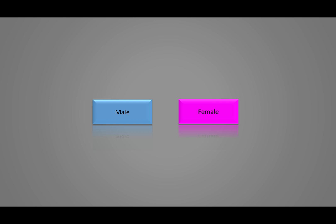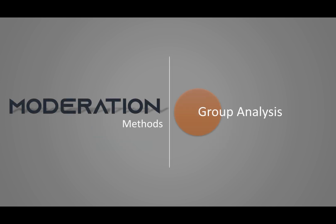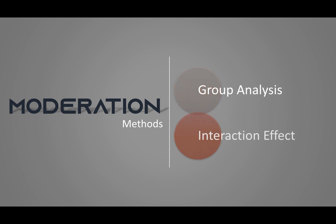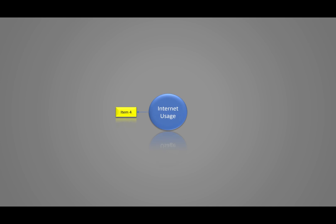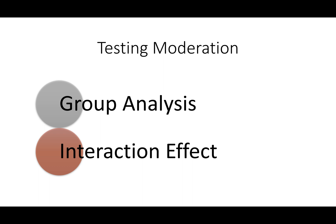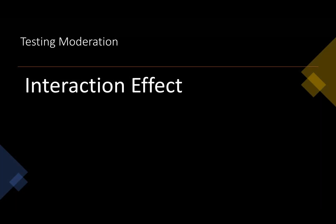Today I'll be focusing on the second form of moderation effect testing, which is the interaction effect. We use interaction effect when our variables are latent in nature or we have continuous data. For example, internet usage as a moderator has been measured through four different items or questions, making it a latent construct. These items have been measured through Likert scales or rating scales — continuous in nature — so we use interaction effect.